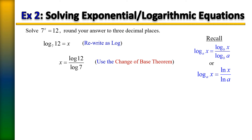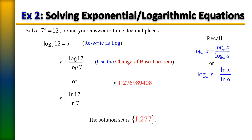You can also write it as the natural log of 12 divided by the natural log of 7. To get the value you'll need to use your calculator since you'll only get an approximation. Go ahead and plug it in. Rounding to three decimal places, you're going to have approximately 1.277.